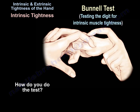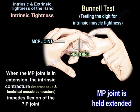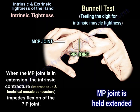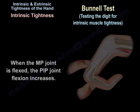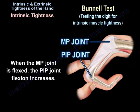How do you do the test? When the MP joint is in extension, the intrinsic contracture — which is interosseous and lumbrical muscle contracture — impedes flexion of the PIP joint. When the MP joint is flexed, the PIP joint flexion increases.